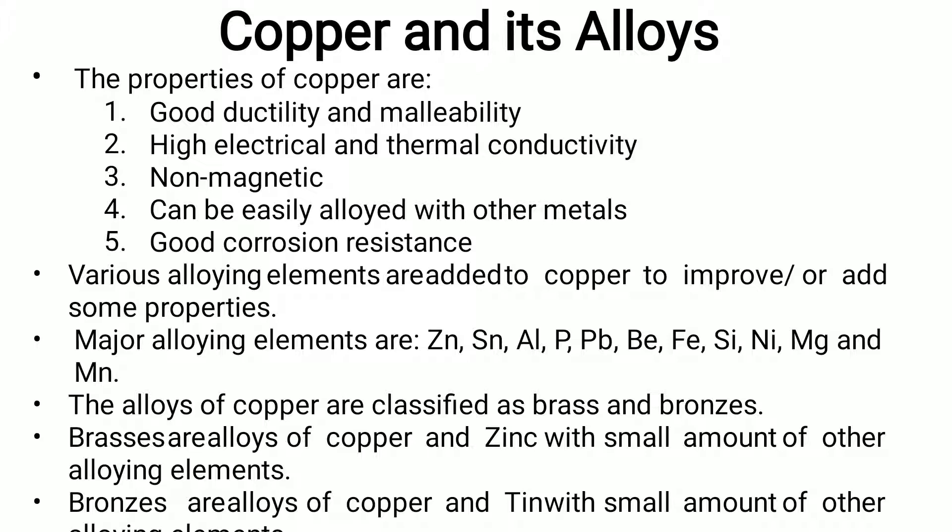Let us start with copper and its alloys. We need to know about copper first. The properties of copper include good ductility and malleability, high electrical and thermal conductivity, non-magnetic property, and it can be easily alloyed with other metals.